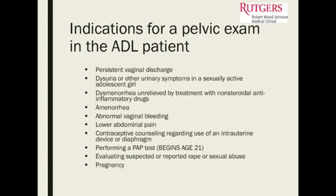Indications for a pelvic exam in the adolescent patient include persistent abnormal vaginal discharge, dysuria or urinary symptoms in a sexually active adolescent, dysmenorrhea that doesn't respond to normal treatment, amenorrhea, abnormal vaginal bleeding, lower abdominal pain, consideration of a long-acting reversible method like an IUD, and pap smears — though current guidelines recommend starting those at age 21, not prior.